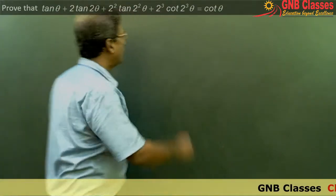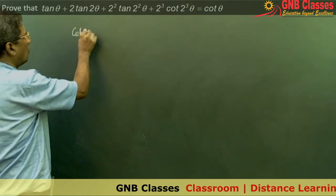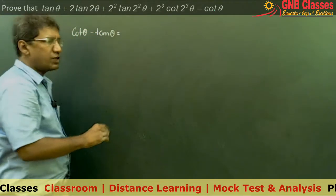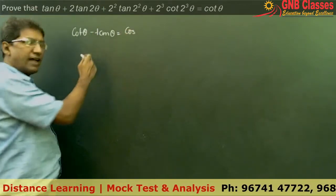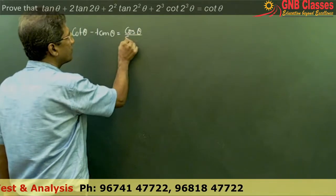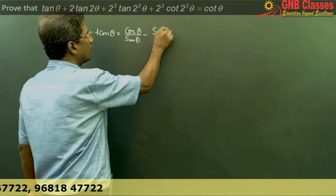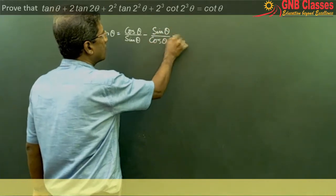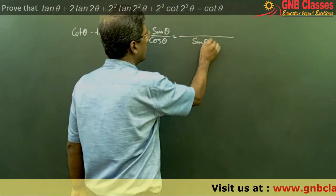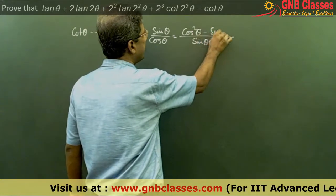In this problem, let us start from cot θ minus tan θ. We convert tan and cot in terms of sine and cosine. Taking the LCM, in the numerator we get cos²θ minus sin²θ.